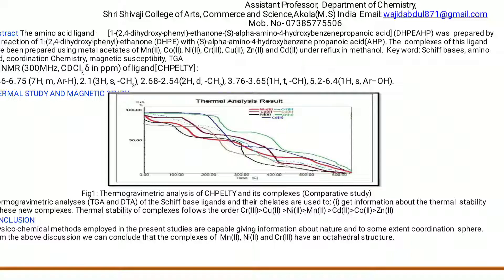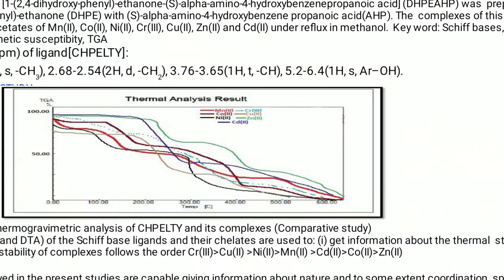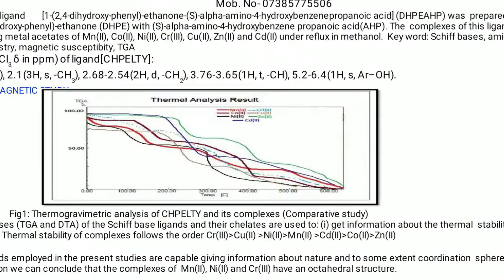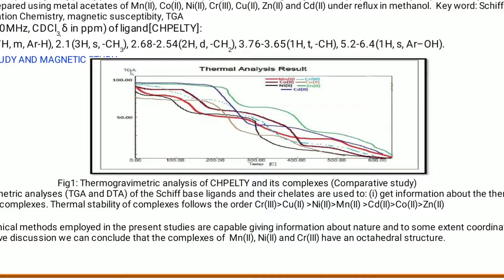Additionally, TGA suggests a general scheme for the thermal decomposition of these chelates. This graphical representation indicates a general scheme for thermal decomposition of the chelates. In the present investigation, heating rates were suitably controlled at 10 degrees Celsius per minute under nitrogen atmosphere, and weight loss was observed.